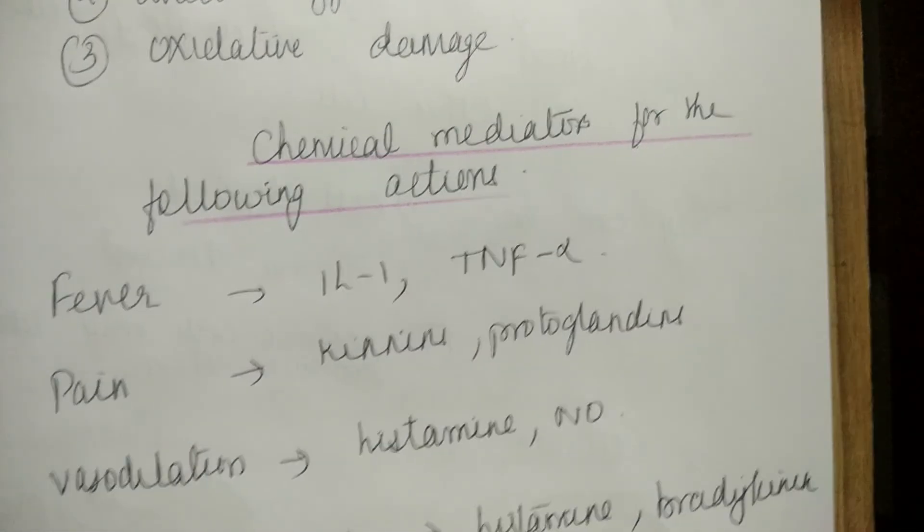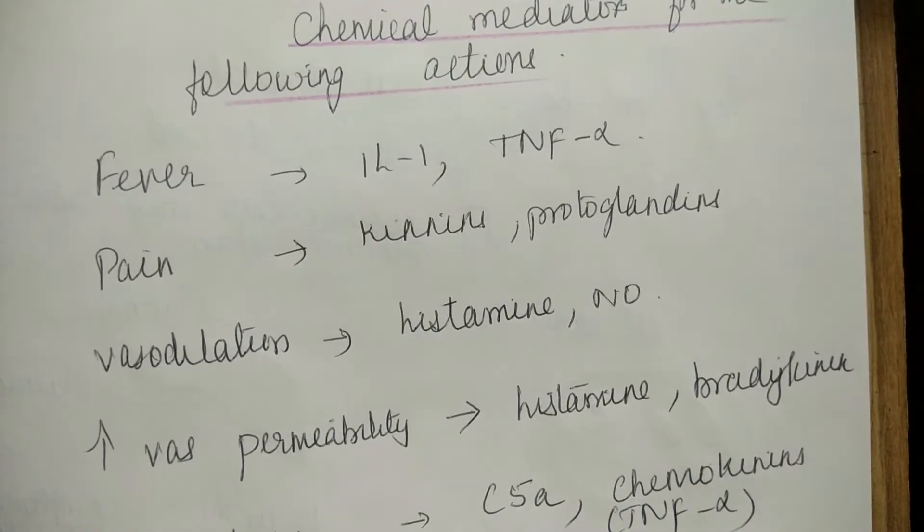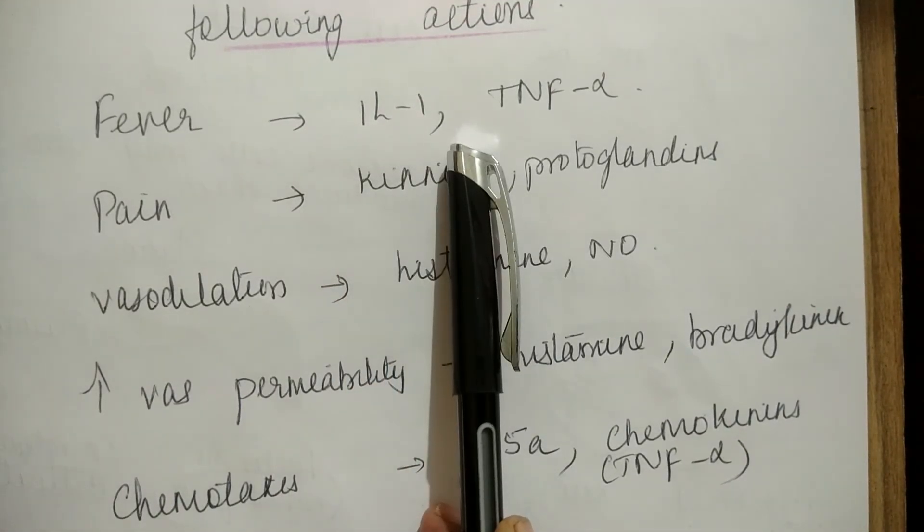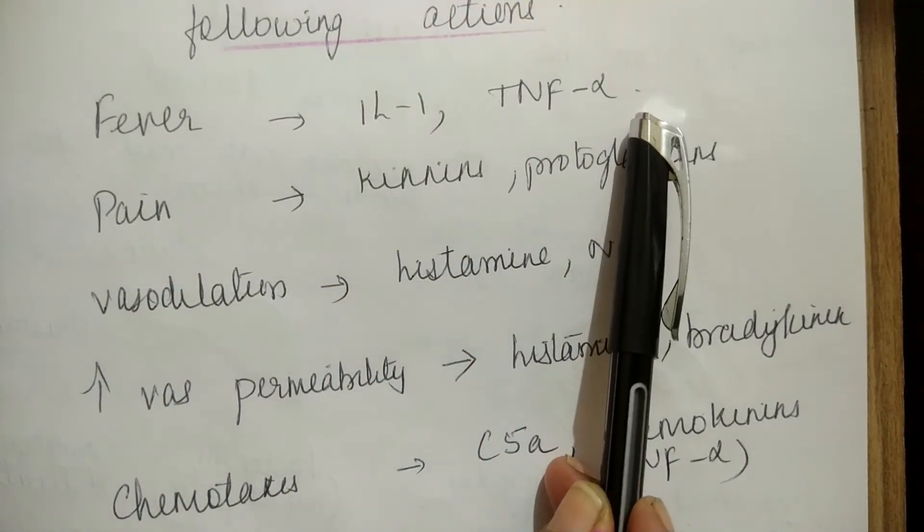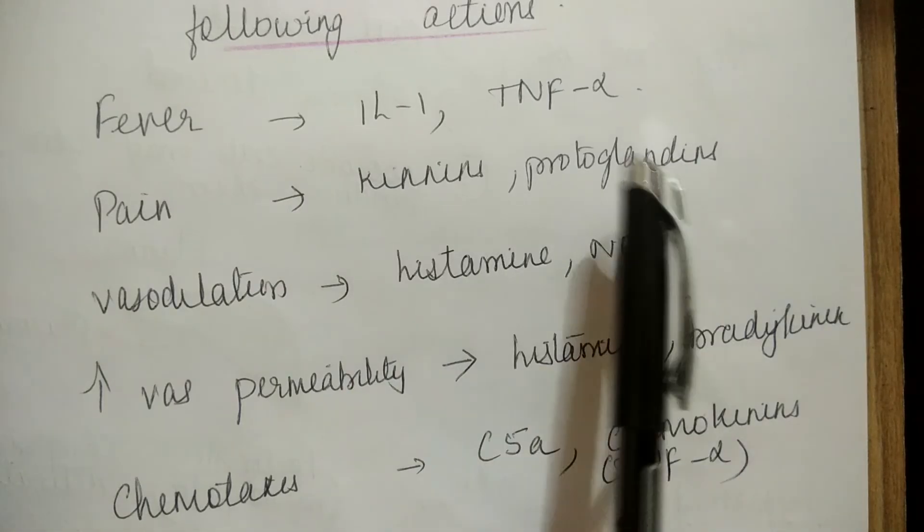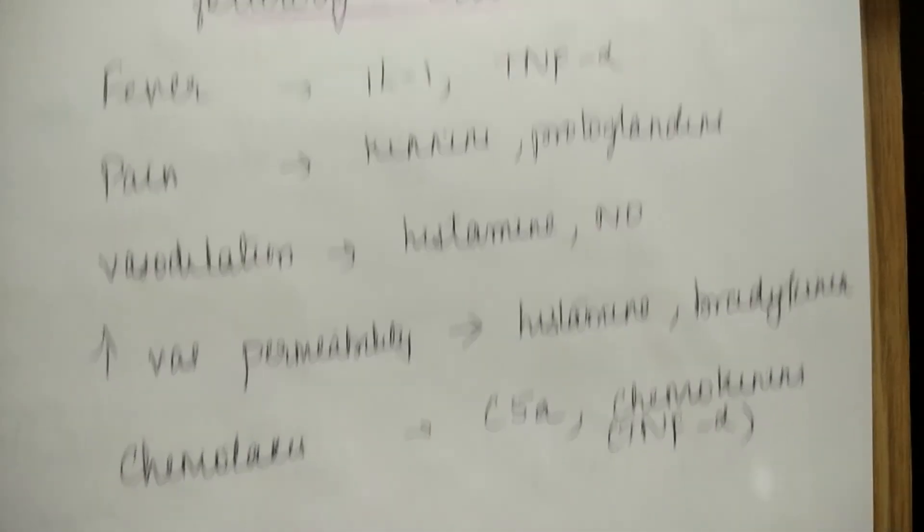Now some examples of chemical mediators for the following actions. Fever: Interleukin-1, tumor necrosis factor alpha (IL-1, TNF-alpha). Pain: kinins and prostaglandins produce pain.